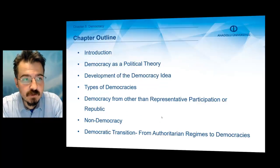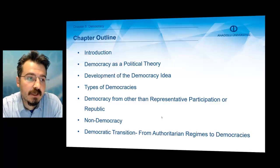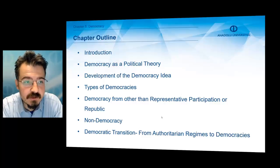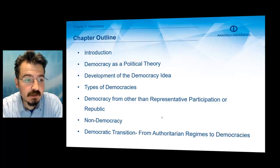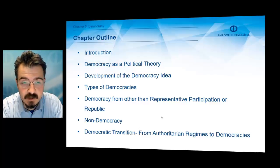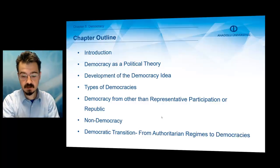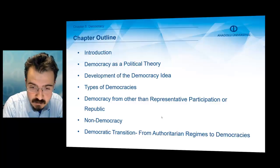As for the chapter outline, it starts with an introduction, followed by democracy as a political theory, then the development of the democracy idea, then the types of democracies, and then democracy from other than representative participation or republic. Another topic is non-democracy, and the final topic is the democratic transition from authoritarian regimes to democracies.